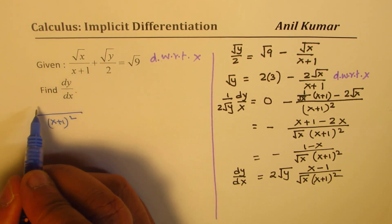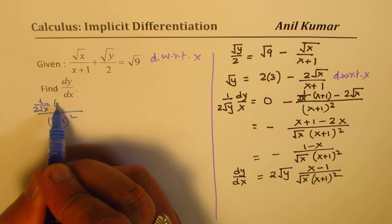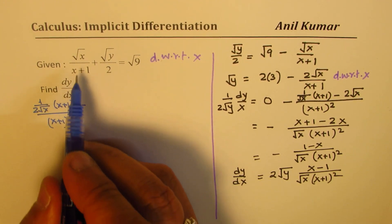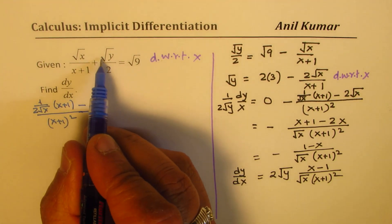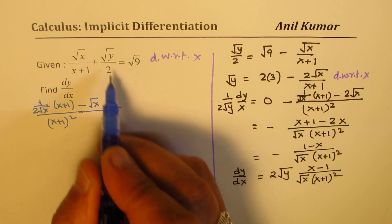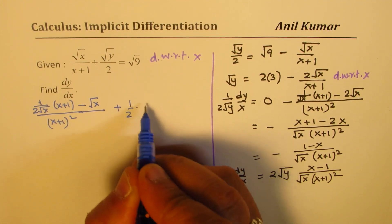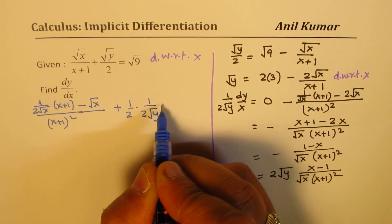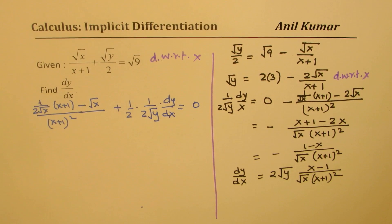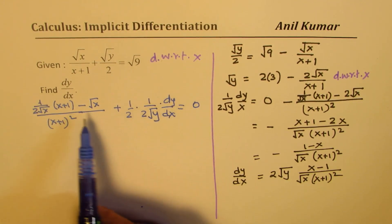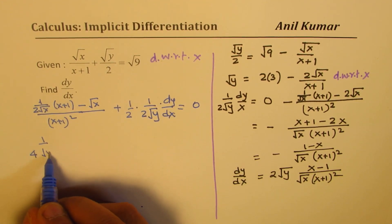The derivative of square root of x is 1 over 2 square root x, times the denominator (x plus 1), minus square root of x times the derivative of the denominator. For the second term, square root of y, it'll be half as a constant, times 1 over 2 square root y times dy/dx. The right side is a constant, so we get 0. Rearranging, we get 1 over 4 square root y times dy/dx.